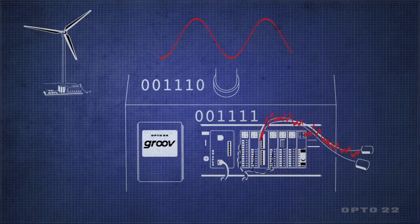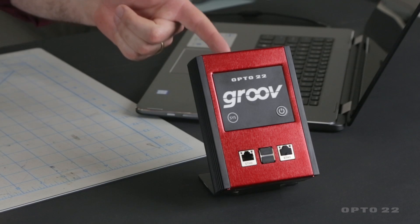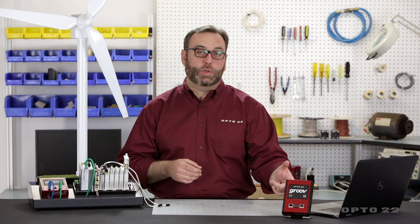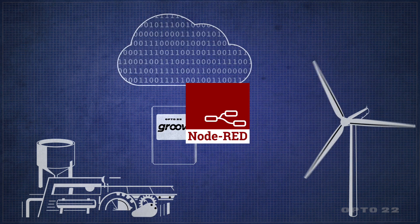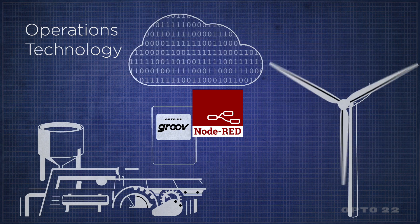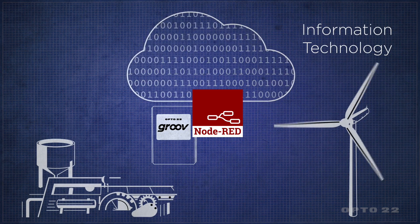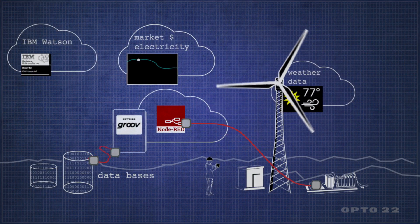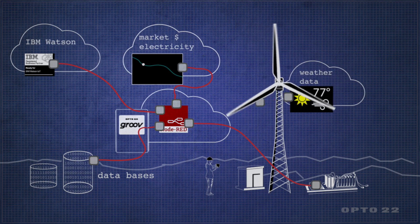Once those electrical signals are digitized into data, we can do all kinds of interesting things with it. And that's what I'm going to show you today, using a software tool called Node-RED running on this secure, industrially hardened edge computing device we call the Groovebox. Node-RED is a visual software development tool used to exchange information from operations technology, or OT, like this wind turbine, with information technology, or IT. It does that by stitching together hardware devices, APIs, and cloud services.